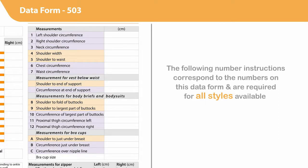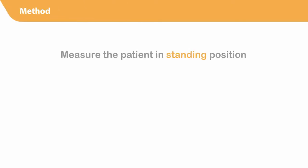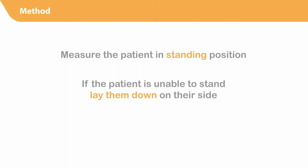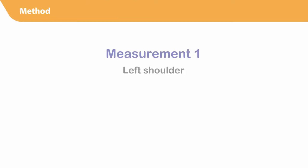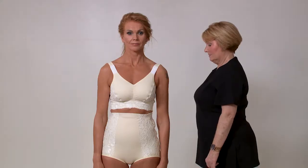Use the torso compression garment Form 503 as a guide when measuring body lengths and circumferences. The following numbered instructions correspond to the numbers on this data form and are required for all styles of torso garments. Measure the patient in standing position. If the patient is unable to stand, lay them down on their side. Record each measurement on data Form 503 as you take them.